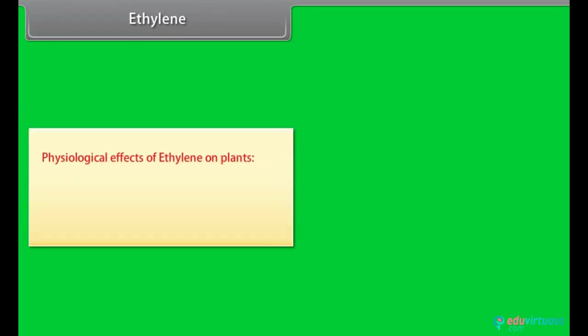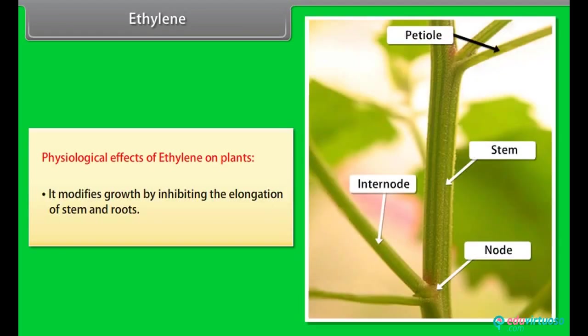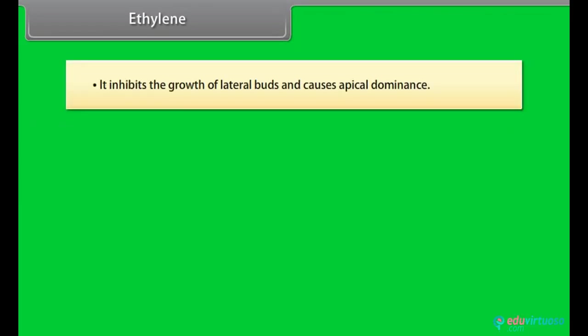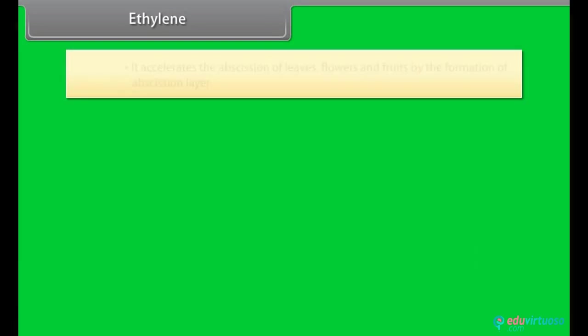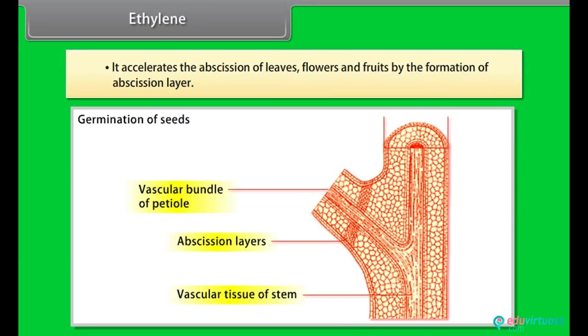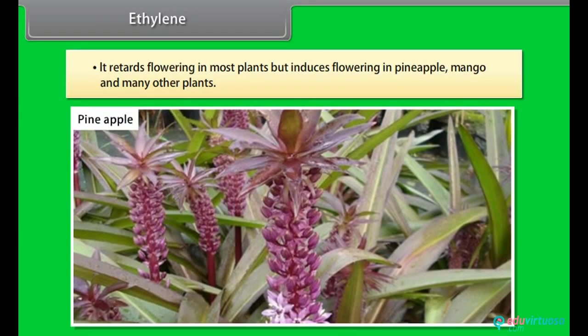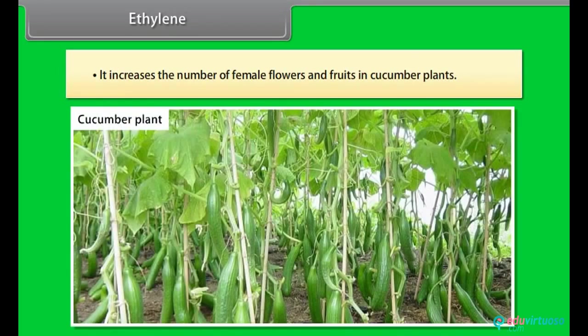Ethylene. Physiological effects of ethylene on plants. It modifies growth by inhibiting the elongation of stem and roots. It inhibits the growth of lateral buds and causes apical dominance. It accelerates the abscission of leaves, flowers and fruits by formation of abscission layer. It retards flowering in most plants but induces flowering in pineapple, mango and many other plants. It increases the number of female flowers and fruits in cucumber plants.